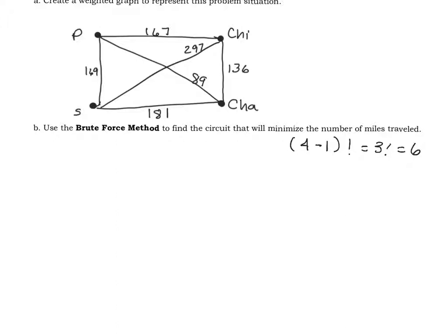Now, we will have two of these circuits with the same weight because you could go in one direction and then go the opposite direction and they'll have the same weight. So let's get started. If I go from Peoria to Chicago to Champaign to St. Louis to Peoria, that's going to be 167 plus 136 plus 181 plus 169, and that'll be 623 miles.